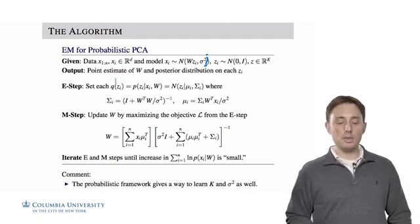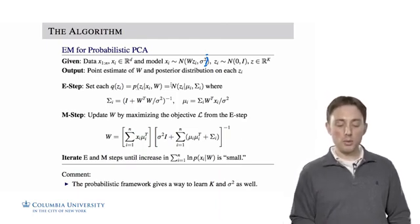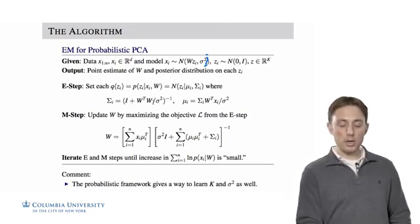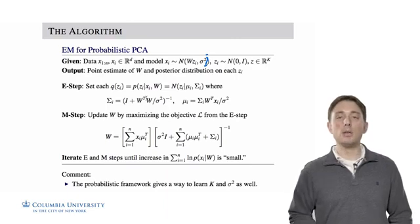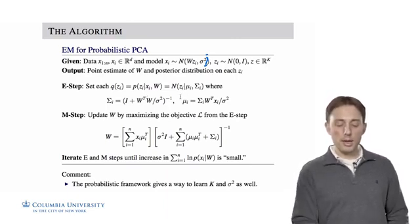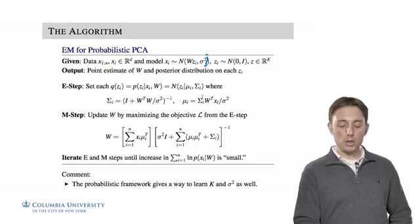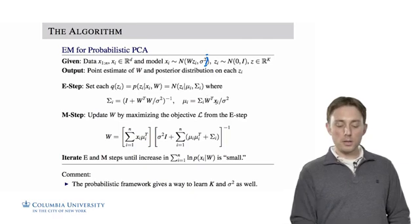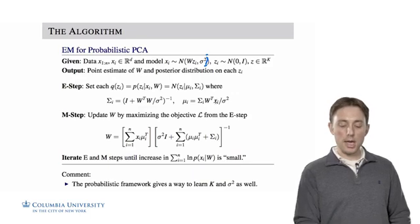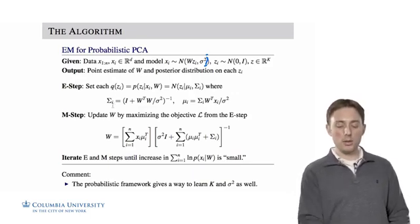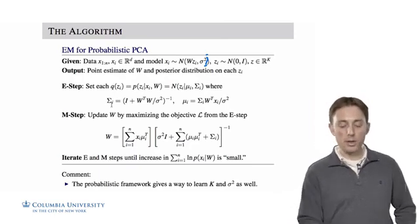So the E step, we have to set Q of Zi to be equal to its conditional posterior distribution. This is a straightforward calculation. We can show it's a multivariate Gaussian with mean mui and covariance sigma I, where sigma I is equal to the identity plus W transpose W divided by the noise parameter inverse. Every single Zi has exactly the same covariance in the conditional posterior. Then the mean of the conditional posterior is equal to the covariance times W transpose Xi divided by sigma squared. We calculate this using the most recent value for W in both of these equations. Because Xi appears here, the mean is what's different for each data point.